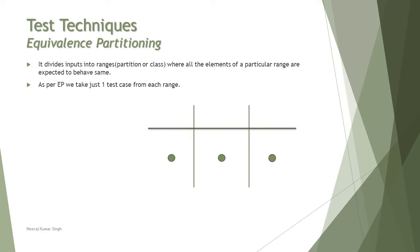As we know from the foundation syllabus, equivalence partitioning is a technique which helps you minimize your test cases by dividing a scenario into different classes or ranges. As per equivalence partitioning, you generally take one test case from each range. For example, if there's a scenario with three different ranges, you create a partition and from each partition take one test case at a time, because all elements within that particular range are expected to behave the same.